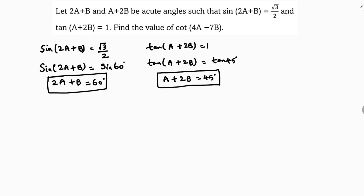Now I need to solve both equations. I will use the substitution method. From the second equation, a = 45° − 2b. I will substitute this value into the first equation.